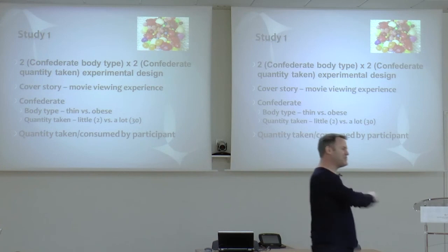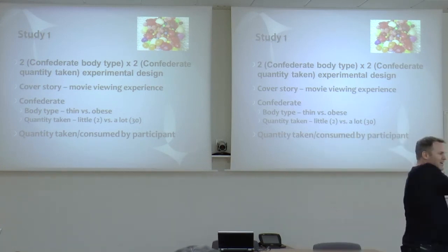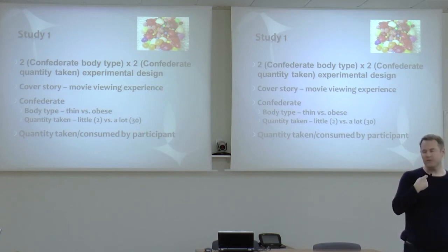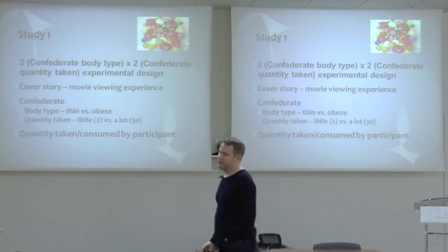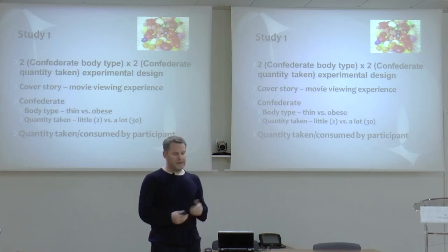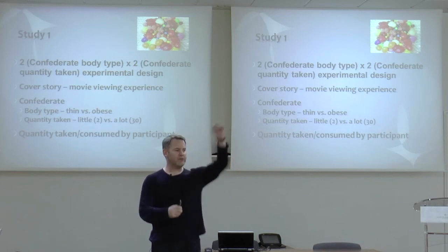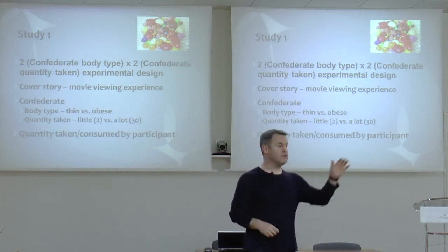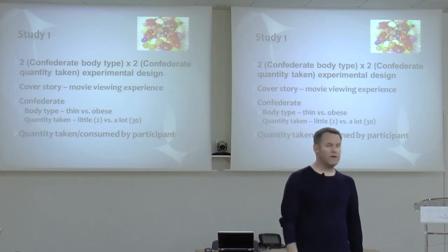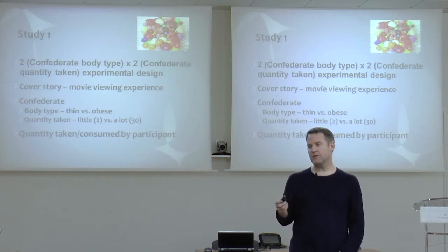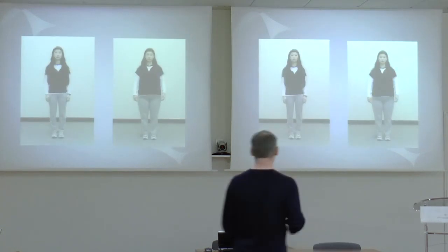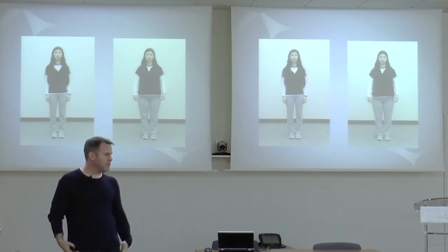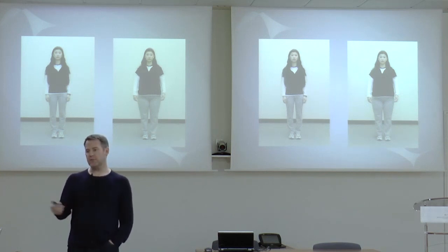We leveraged where we live. Vancouver is known as Hollywood North with a lot of film production. One studio house did costumes — they actually won the Academy Award for Moulin Rouge. I thought I could have them build what's called an obesity prosthesis. One research assistant agreed to do all the studies, and she had a prosthesis fit to her exactly so she could go from 90 pounds to 190 pounds and you wouldn't be able to tell the difference.